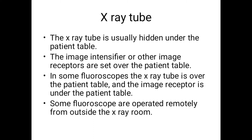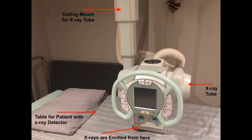The X-ray tube is usually hidden under the patient table — this depends on the manufacturer and company. The image receptor sits on top of the patient table. So the arrangement is: fluoroscopy tube under the table, patient table in the middle, and image receptor on top. This is the standard under-table configuration, where the tube is below and the intensifying screen is above.